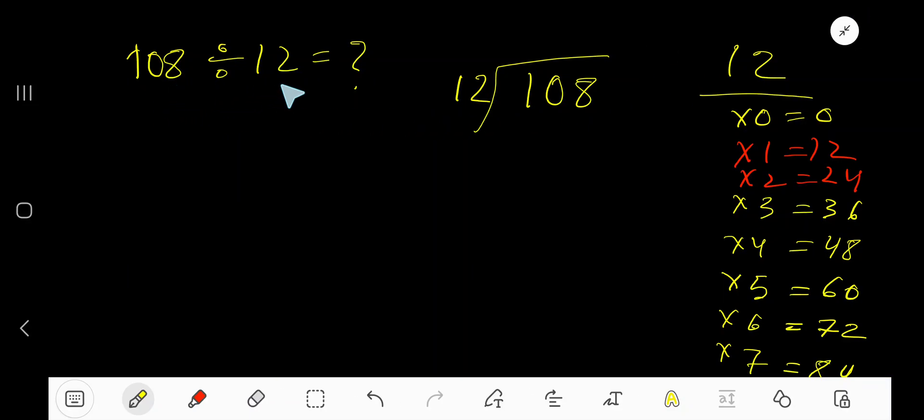108 divided by 12. Here 12 is the divisor, so we need the multiplication table of 12. 12 times 0 is 0, 12 times 1 is 12, 12 times 2 is 24, 12 times 3 is 36, 12 times 4 is 48, 12 times 5 is 60.